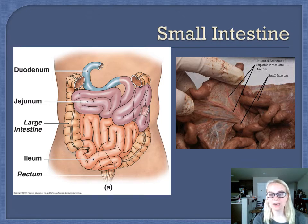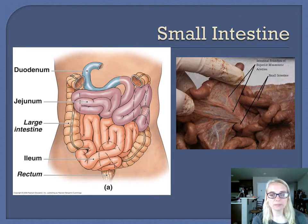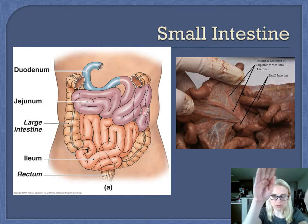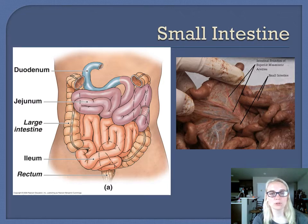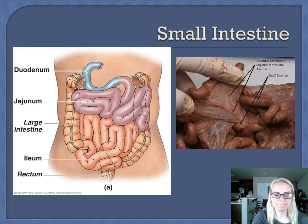There's also a picture showing the mesenteries. The visceral peritoneum, once it's wrapping around the tube, comes back together as a double membrane called the mesentery, and that's what holds nerves, blood vessels, and other structures. You can see them spread out in the picture of the small intestine.